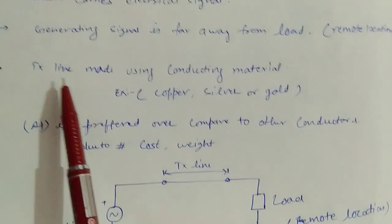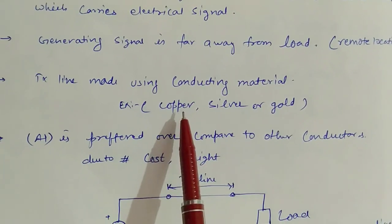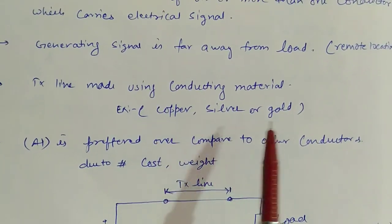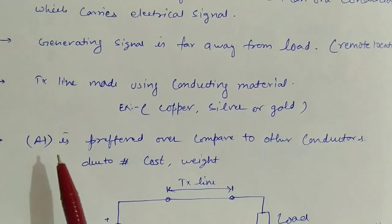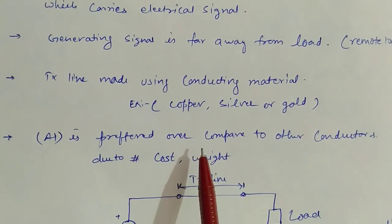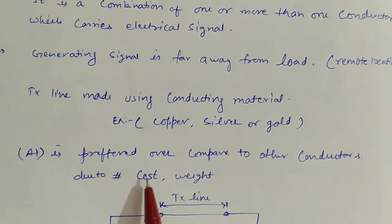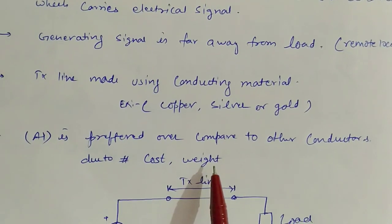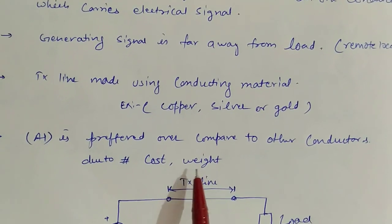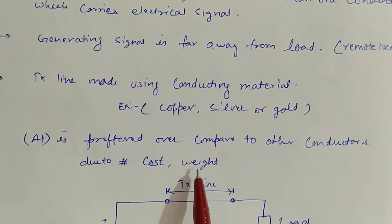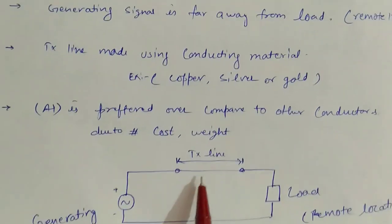Transmission line can be made using different types of conducting material, like copper, silver, gold, and aluminium. But mostly aluminium is preferred over other conductors due to its low cost and low weight — because its density is low, we can consider it a low weight material. So generally we use aluminium to construct the transmission line.